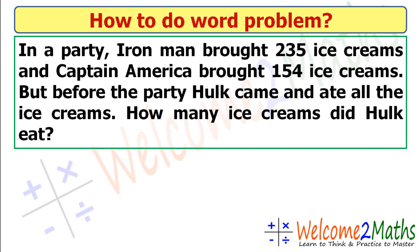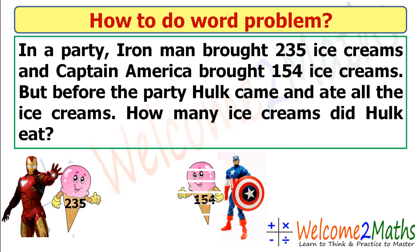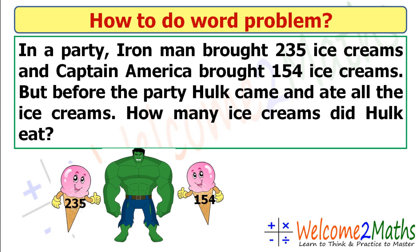Now let's see what is our question and let's read it carefully. In a party, Iron Man bought 235 ice creams and Captain America bought 154 ice creams. But before the party, Hulk came and ate all the ice creams. How many ice creams did Hulk eat? Iron Man bought 235 ice creams and Captain America brought 154 ice creams. So what will you find out — how many ice creams did Hulk eat?